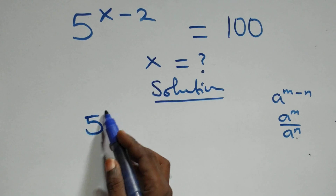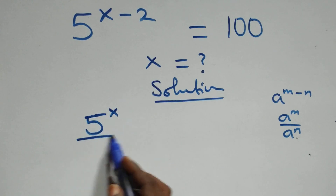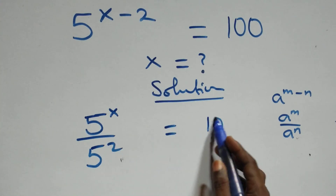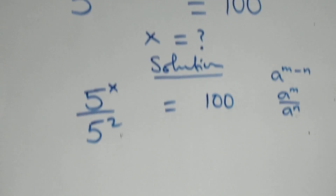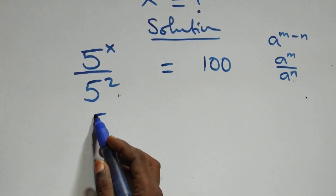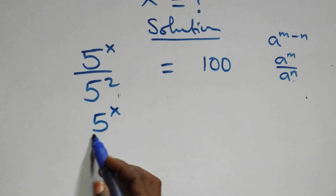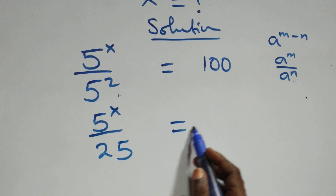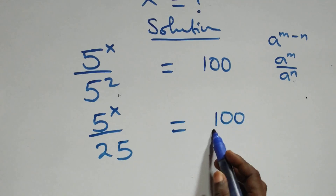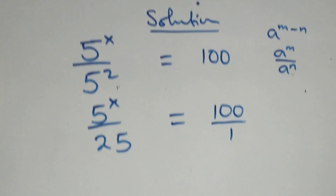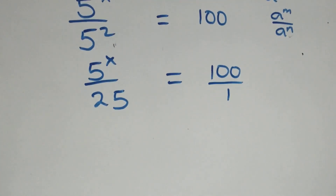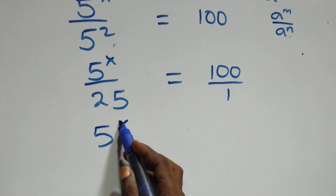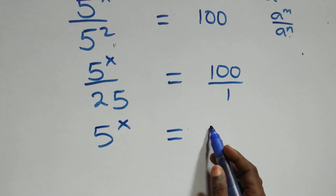This becomes 5 raised to power x over 5 squared equals to 100. At the next step, this is the same thing as 5 raised to power x over 25, since 5 times 5 is 25, equals to 100 over 1. We then cross multiply: 5 raised to power x times 1 is the same as 5 raised to power x, which equals 100 times 25.